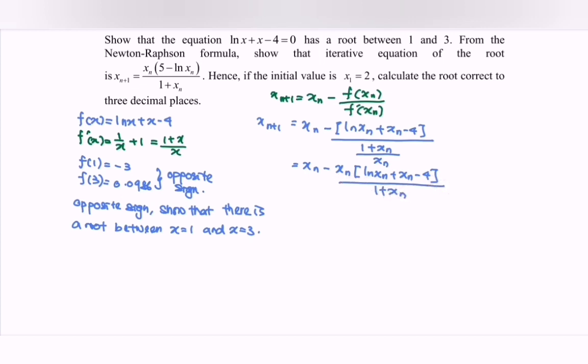Equating the denominators, we get x_{n+1} = [x_n(1 + x_n) - x_n(ln x_n + x_n - 4)]/(1 + x_n).